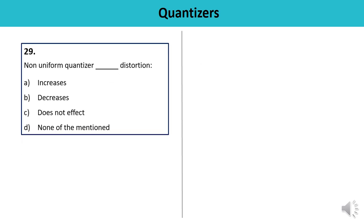Question 29: Non-uniform quantizer distortion — increases, decreases, does not affect, or none? Distortion can be reduced by using a non-uniform quantizer because it has the capability to vary the step size depending upon the input. So distortion decreases. The answer is B.